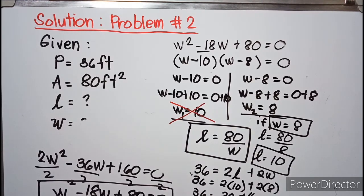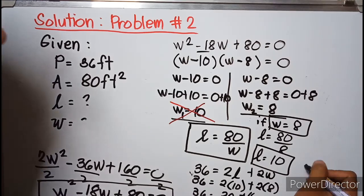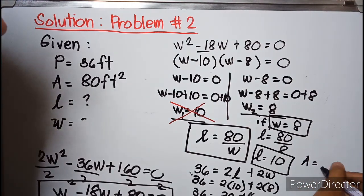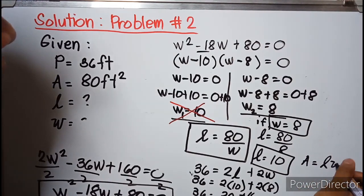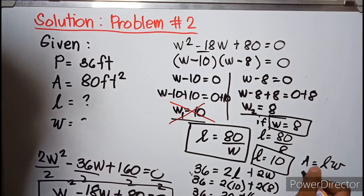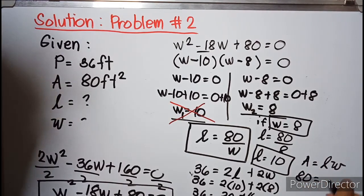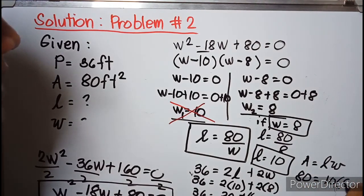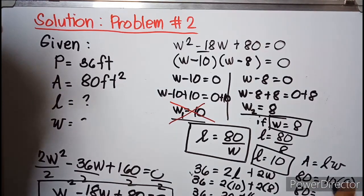Checking area: Area = L × W = 10 × 8 = 80 square feet. 80 = 80. Therefore our length is 10 feet and our width is 8 feet, and both conditions are satisfied.